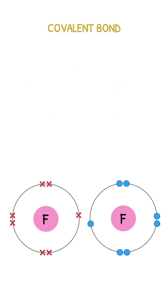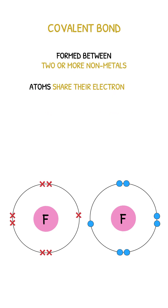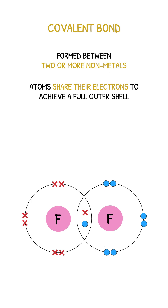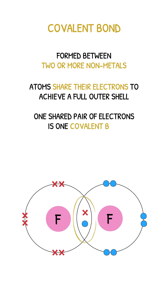Covalent bonds are formed between two or more non-metals, where the atoms share their electrons to achieve a full outer shell. One shared pair of electrons is equal to one covalent bond.